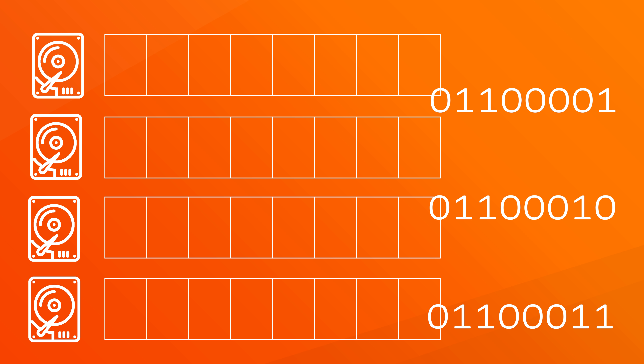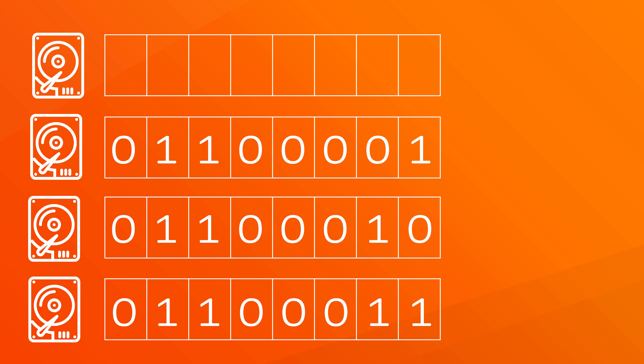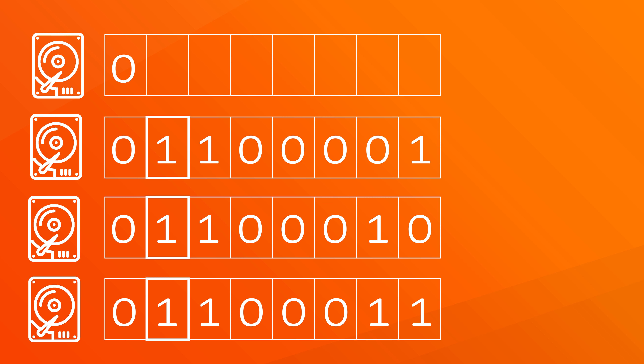Let's save each letter to one of our data drives. What Unraid now does is calculate the values for each slot and checks if the sum is even or not. If it is even, it writes 0. If it is odd, it writes 1 to the parity drive. So in the first slot, we have 0, 0, 0, which added together is 0, so parity writes 0. The second slot is 1, 1, 1, which is 3, so parity writes a 1.